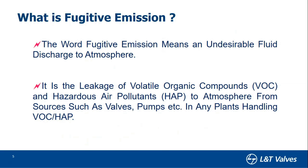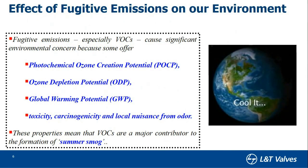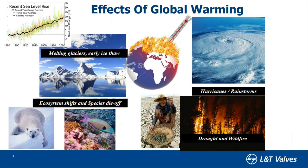This is the definition of fugitive emission. Now let's see what is the effect of these harmful gases on the environment. We find that VOCs are a significant concern because they cause ozone depletion, they cause global warming, and as mentioned, they are carcinogenic and harmful to human health. These VOCs are a major contributor to the formation of summer smog throughout the world. The slide gives a glimpse of the effect of global warming and harmful emissions on the environment.